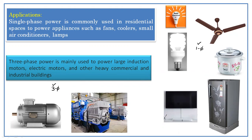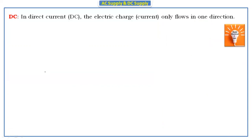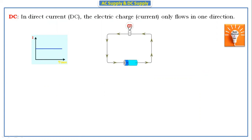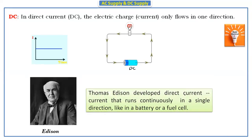Now if we take direct current — DC — in direct current the electric charge flows only in one direction. This is a DC signal; we have the signal in only one direction, so there is no periodic waveform. In a simple DC circuit, we use a battery to give DC supply and the current flows only in one direction. Thomas Edison developed direct current, which runs continuously in only one direction — batteries and fuel cells are examples of DC.